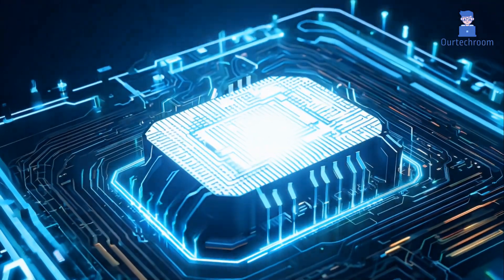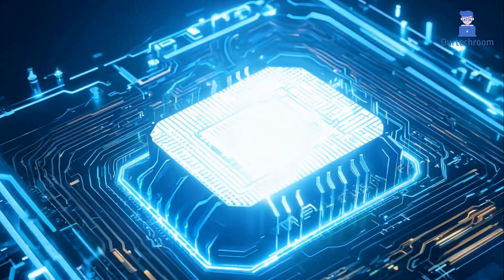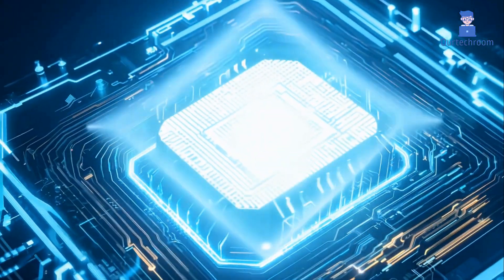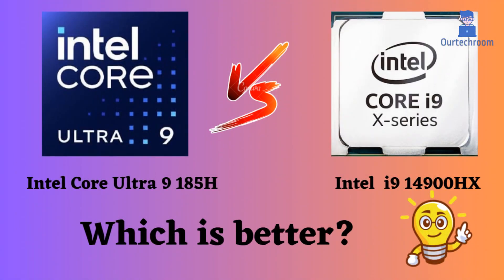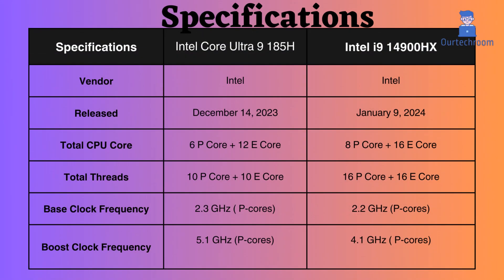In this video, I will compare the Intel Core Ultra 9 185H and Intel Core i9-14900HX, highlighting their differences, and then provide a conclusion to help you determine which one is the better choice. The Intel i9-14900HX was released on January 9, 2024, which is around one month after the release of the Intel Core Ultra 185H.